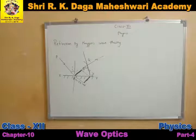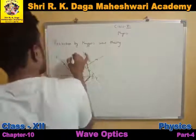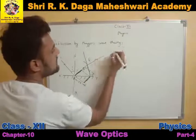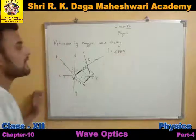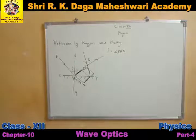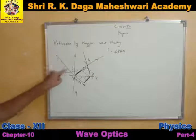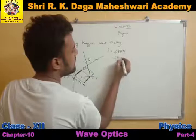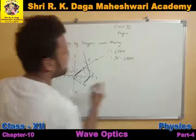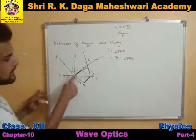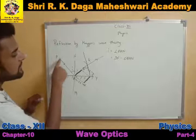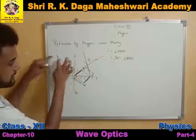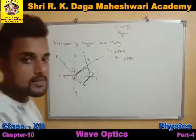Let us name the normal NM. Our angle of incidence is equal to angle PAN. Now, can I write angle PAN as 90 minus angle QAN? Yes — because looking at the figure, the total angle PAQ is 90 degrees. And when PAQ is 90 degrees, I can easily write PAN as 90 minus QAN.